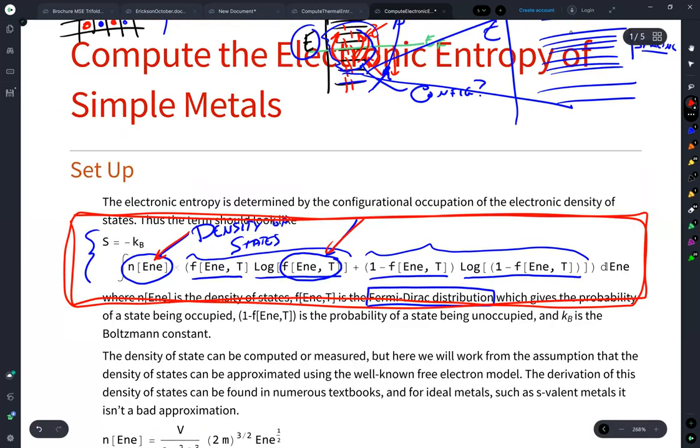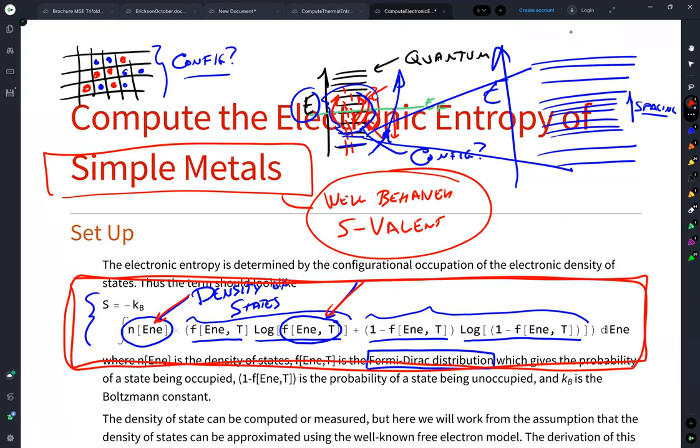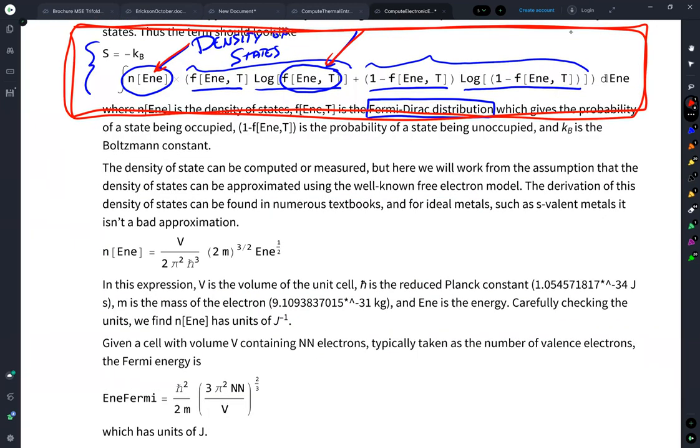But what we're going to do here is assume that we have a simple metal. And by that, I mean a well-behaved s-valent metal. If you go to the metals that are in the transition metals, you have D states, and things start getting a little bit wonky, but well-behaved s-valent metals, they obey relatively closely the free electron model.